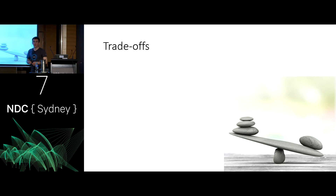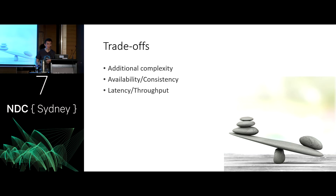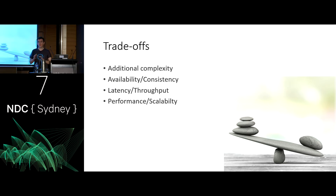Like any architectural decision, implementing these things is a trade-off. You might get increases in resilience and reliability, but it's going to impact other areas — additional complexity in your code, longer development time, availability-consistency issues (CAP theorem), and potentially slower systems in order to scale better. These things don't come at zero cost. It's going to be up to you with your applications to weigh up these particular costs.